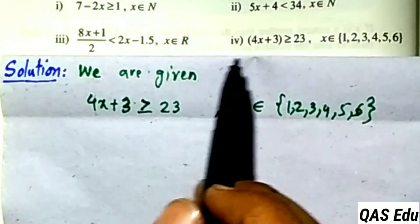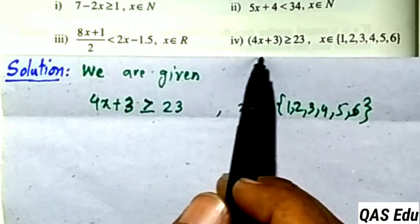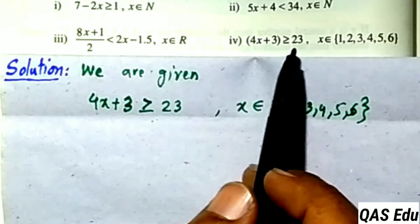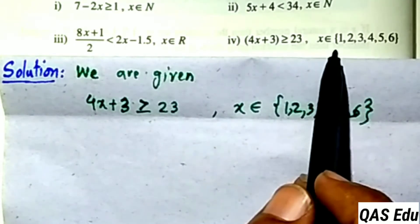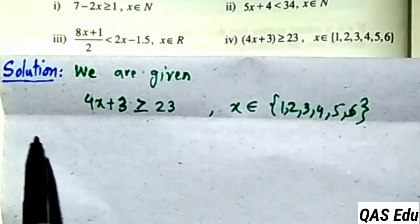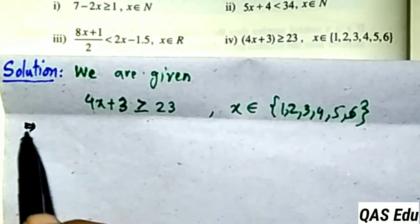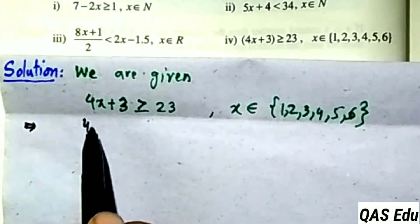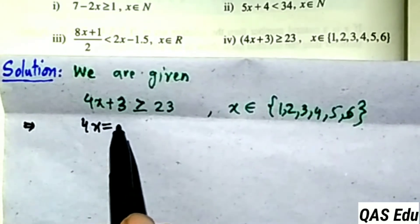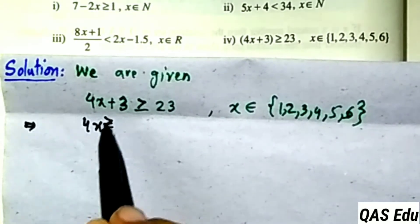Part 4: The inequality is greater than or equal to 23, where x belongs to the set {1, 2, 3, 4, 5, 6}. We need to find which values of x from this set satisfy the inequality.